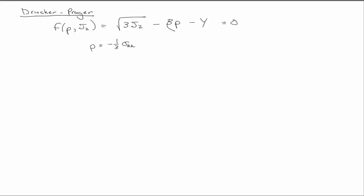So you can see that if we use an associated flow rule with this, we're going to have some partial F partial sigma IJ. Well, we'll obviously have, due to this term here, a pressure dependence.